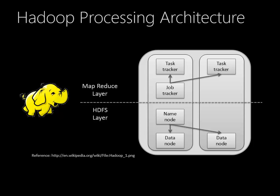Hadoop's basic architecture at a very high level is broken into two components. There's the HDFS layer — the Hadoop Distributed File System — that's where the data is stored. It's stored in an MPP fashion, where the data is stored across many different nodes, with coordinating nodes on top that keep everything organized and marshal the resources between them.